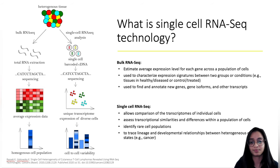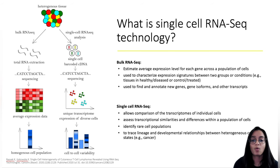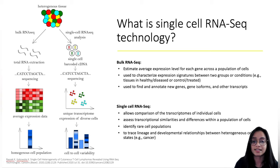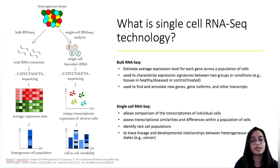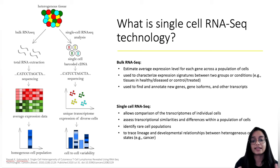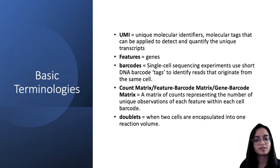To understand the heterogeneity in a system, we require something like single cell RNA sequencing technology, where we again extract RNA from all the cells, but in this case we do not average out the expression. We sequence the RNA from each cell and quantify expression for each cell, giving us a more granular, better resolution of expression profiles at the cellular level, allowing us to compare expression between cells.